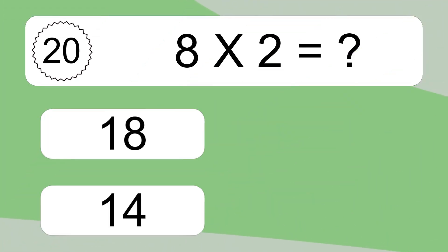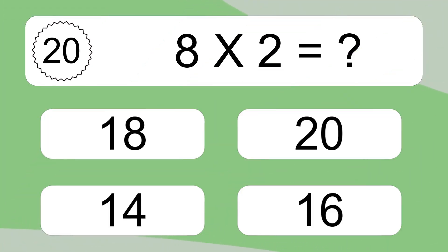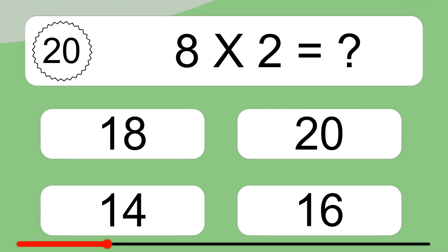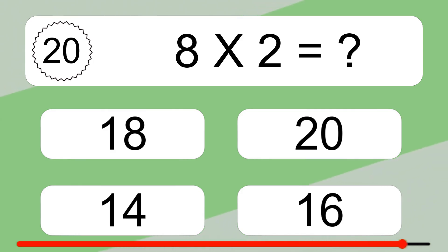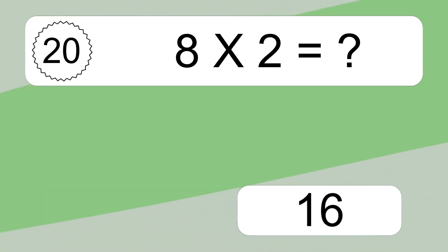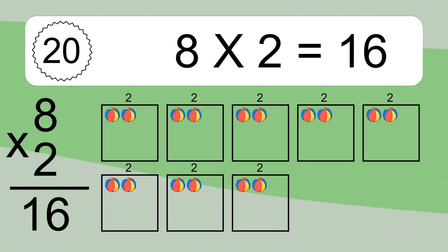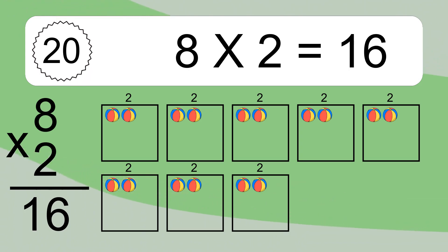8 times 2 equals what? We have 8 boxes, and each box has 2 colorful balls inside. If you count all the balls in all the boxes together, you will have 8 times 2 balls.